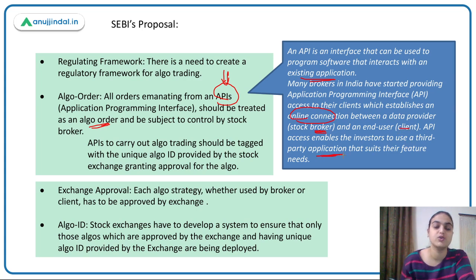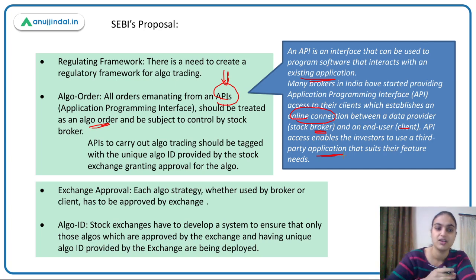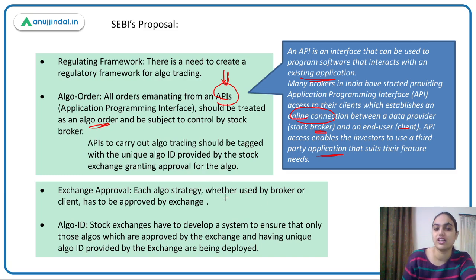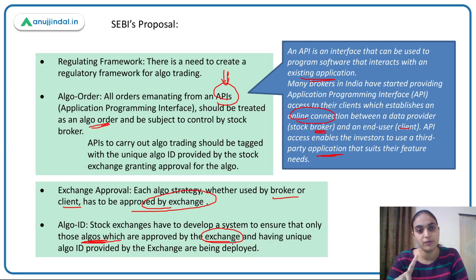SEBI wants third-party application-based orders to be regulated as well. Under the proposal, each algo strategy — whether used by the broker or the client — will require approval from the stock exchange. Stock exchanges need to develop systems that ensure only those algos approved by the exchange are actually being deployed. Unapproved algos will not be allowed to process orders.